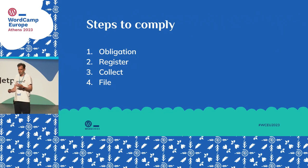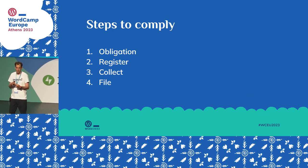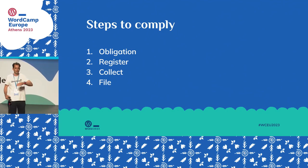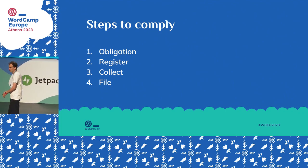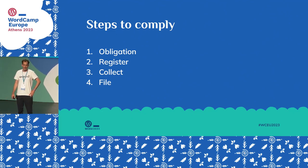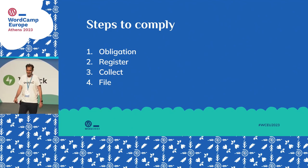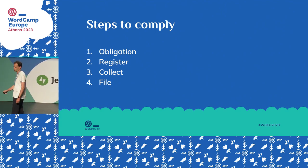You can comply with taxes in four simple steps — not always easy to implement, but four simple steps. First, you have to know where you are obliged to register. In most locations there's a threshold: if you sell for a certain amount, only then do you have to register. For example, in the UK it's £85,000. In Spain, you have to register before you start selling. The way to find this out is by visiting your local tax office — they are generally kind people — or consult your local Chamber of Commerce.